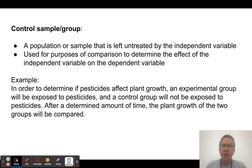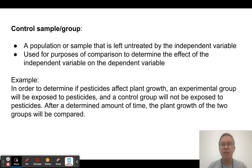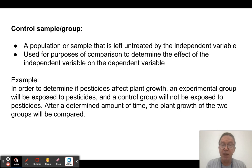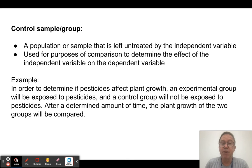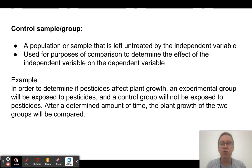Controlled samples or groups are not the same thing as controlled variables. A controlled sample or control group is something different — it's a sample or group kept for purposes of comparison, one that did not experience the change imposed by the independent variable. For example, if I want to find out the effect of salt water on plant growth, I take one group of plants — my control group — and give them regular water like they would normally get. My experimental group gets salt water. The presence or absence of salt water is my independent variable, and plant growth is my dependent variable.